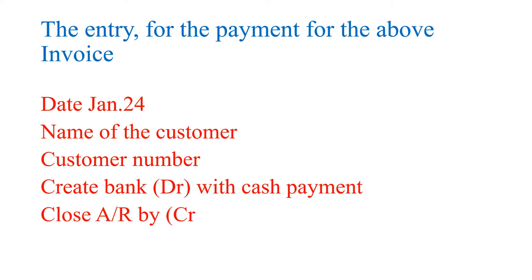When you get the cash, you debit the bank — bank is an asset account, so it increases. You will also reduce the asset account by crediting and closing the accounts receivable. This was the temporary account created when the customer bought goods on account, so you created accounts receivable with a debit.